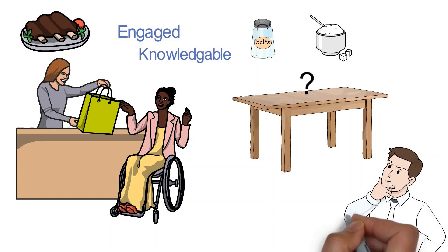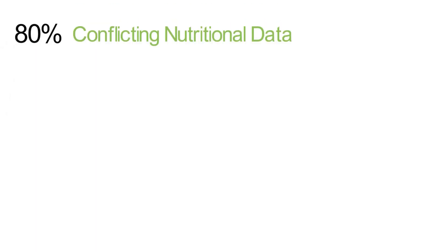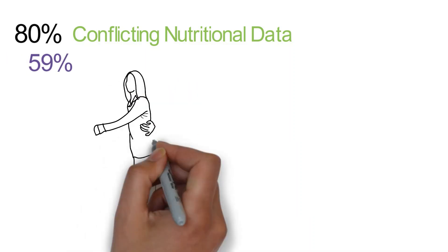But there's a lot of confusing information to wade through. Studies show that 80% of shoppers come across conflicting nutritional data, and 59% doubt the choices they're making for their families.